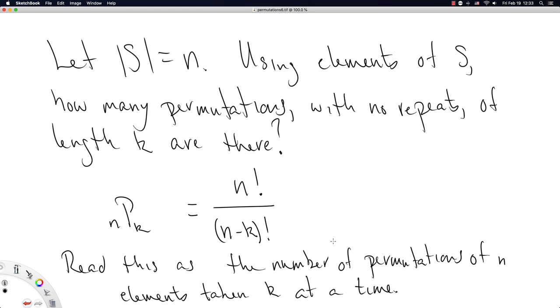We read this as the number of permutations of n elements taken k at a time. This is our definition of permutations, or this is at least the calculation to figure out the number of permutations from a set consisting of n elements where we're interested in sequences of length k.